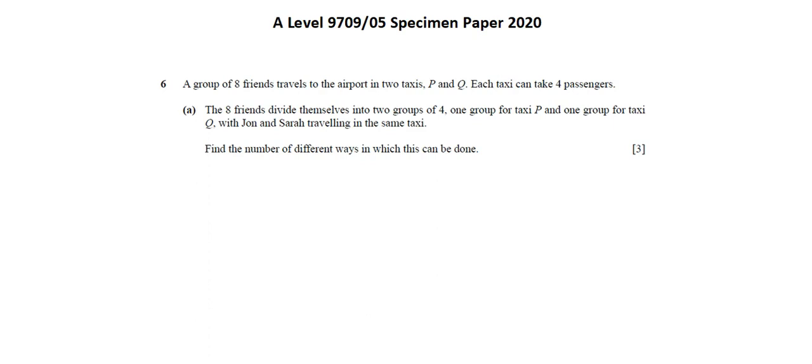A group of eight friends travels to the airport in two taxis, P and Q. Each taxi can take four passengers. Requirement A: The eight friends divide themselves into two groups of four, one group for taxi P and one group for taxi Q, with John and Sarah traveling in the same taxi. Find the number of different ways in which this can be done.